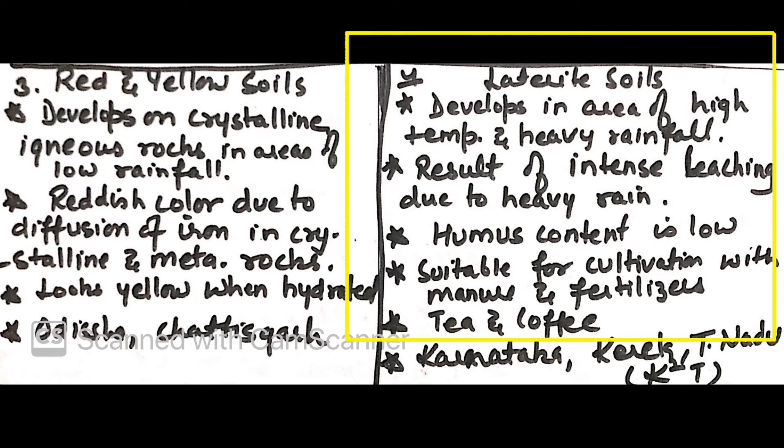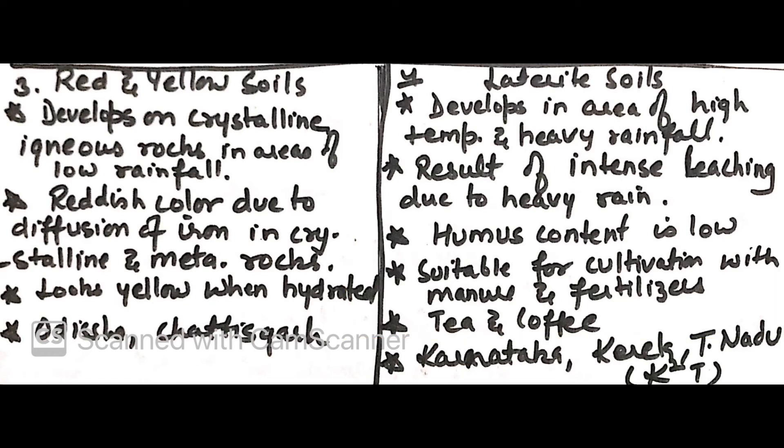Moving on to laterite soil. It develops in areas of high rainfall and high temperature. It is a result of intense leaching due to heavy rain. Humus content is very low in these soils. Suitable for cultivation with manure and fertilizers. Tea and coffee can be grown in such soil. Areas: Karnataka, Kerala, Tamil Nadu.